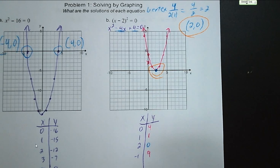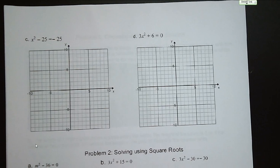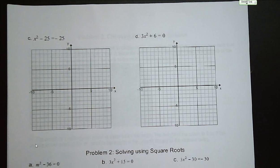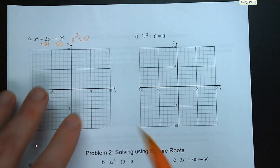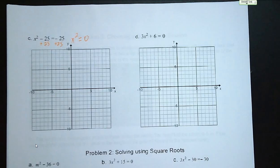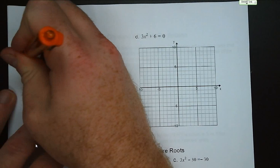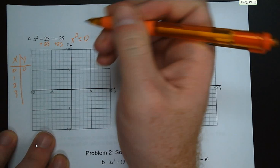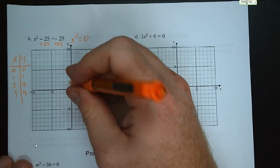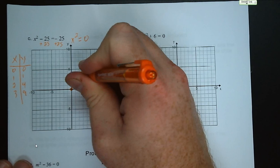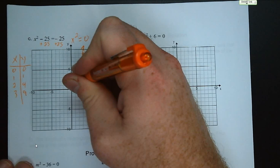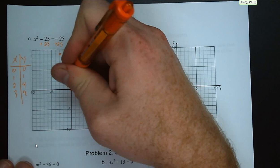I want you guys to try letters C and D on your own. For letter C, the equation is not in standard form, so we add 25 to both sides to get x squared equals zero. We've graphed that before: zero zero, one one, two four, three nine. We mirror across the axis of symmetry. The only solution is at zero, zero — the only place we're touching the x-axis.